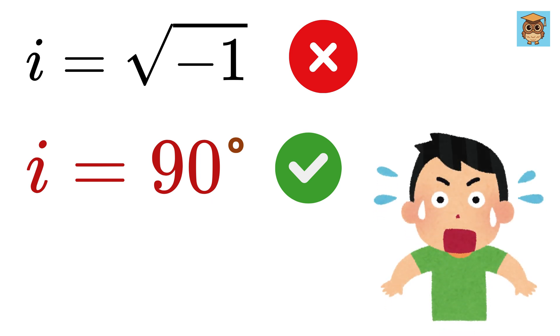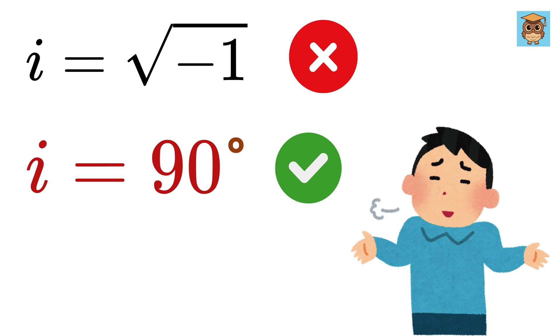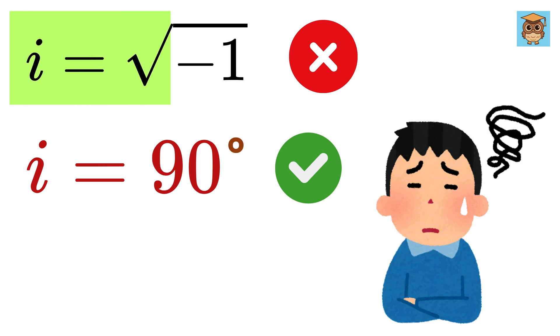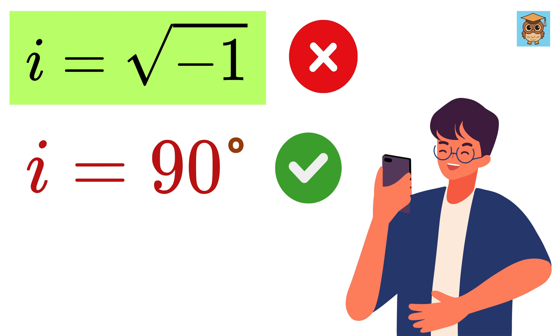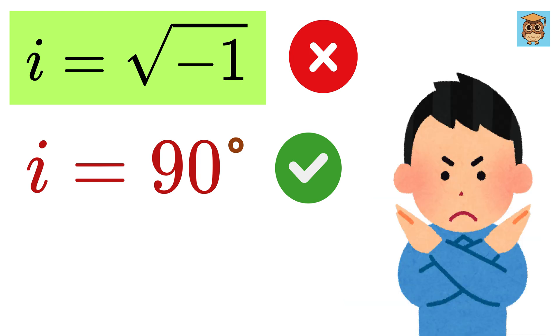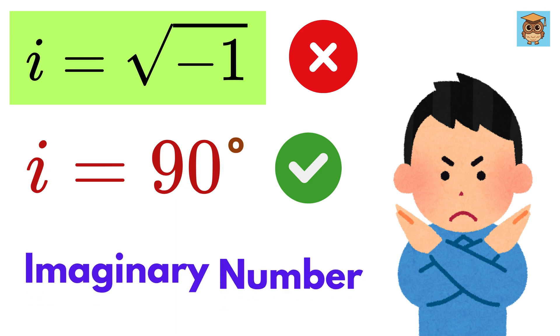Imaginary numbers are not imaginary, and I am damn sure that hardly anyone understands what the hell this i, which equals the square root of negative one, is. Therefore, after watching this video, you will never call i as an imaginary number.